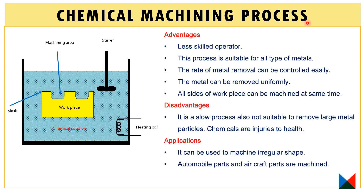The advantages of the chemical machining process are: less skilled operators are required; the process is suitable for all types of metals, both conductive and non-conducting materials; and the rate of metal removal can be controlled easily using the power supply. Additionally, metal can be removed uniformly.